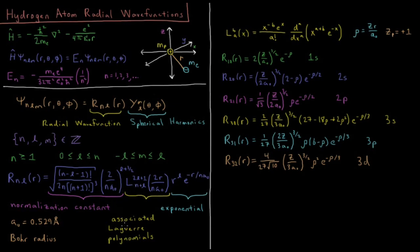Next we have the associated Laguerre polynomials, L of, we have two integers that pick what the polynomial is, n plus l and 2l plus 1. And it is a function of 2r over n a0. So it will involve constants times powers of this 2r over n a0.